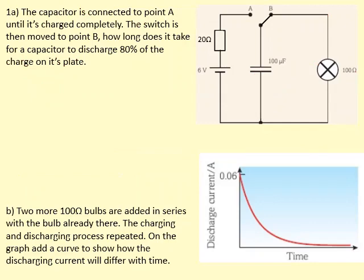This capacitor was charged completely by connecting the switch to point A. And then you start to discharge it by connecting it to point B. We want to figure out how long it takes for a capacitor to discharge 80% of the charge on its plate. So that means only 20% will be remaining. So you need to be very careful with the wording here. So in the equation Q equals Q0 E to minus T over RC.